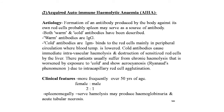The second condition requiring splenectomy is Acquired Autoimmune Hemolytic Anemia (AIHA). Etiology: an antibody is produced by the body against its own red cells; the spleen may serve as a source of these antibodies. Both warm and cold antibodies have been described. Warm antibodies are IgG. Cold antibodies are IgM, which bind to red cells mainly in the peripheral circulation where blood temperature is lower. Cold antibodies cause immediate intravascular hemolysis and destruction of sensitized red cells by the liver.